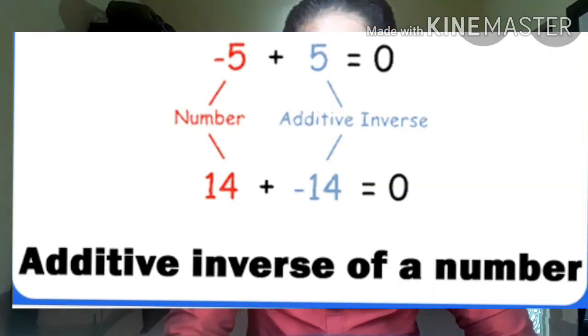Now we are going to learn subtraction of integers. We are going to learn additive inverse. The additive inverse of 5 is negative 5. If the question is negative 5, the answer is positive 5. It is the opposite — that is additive inverse.